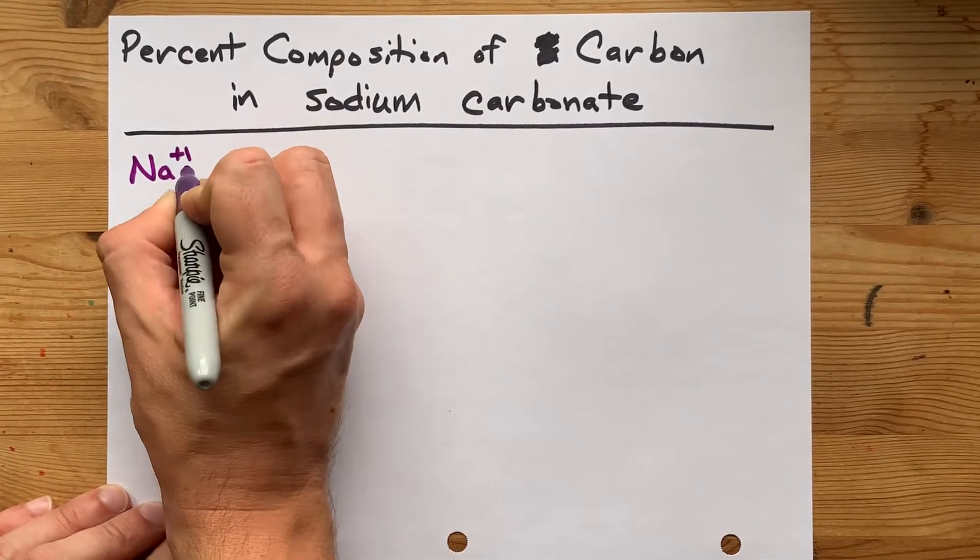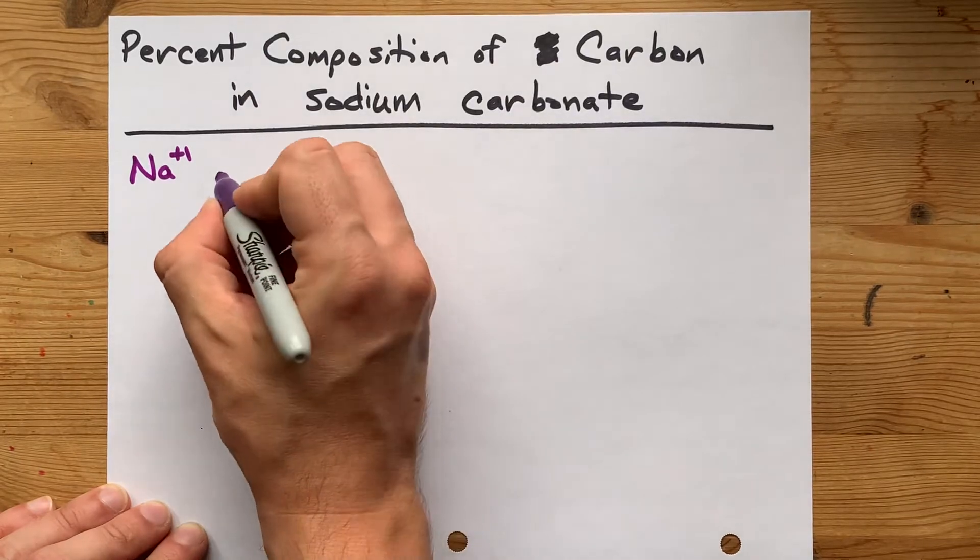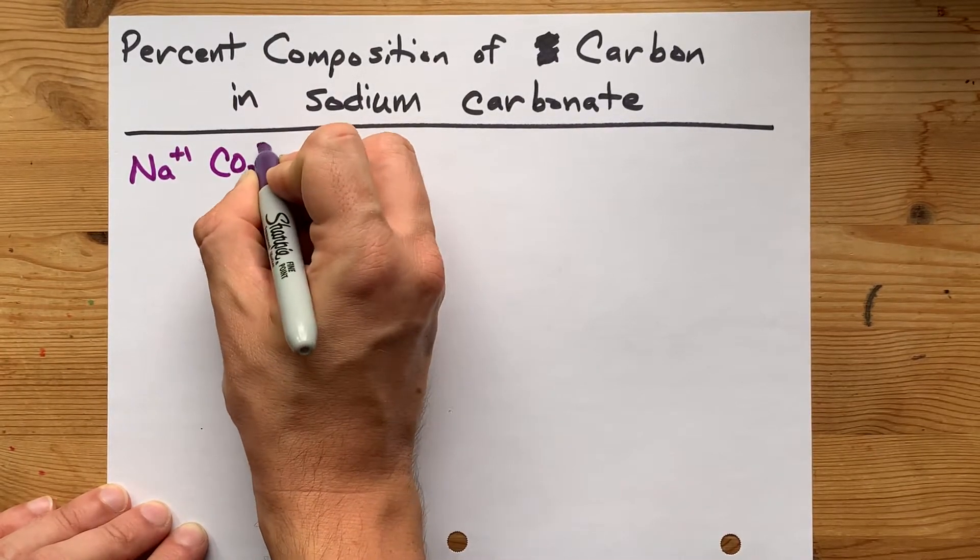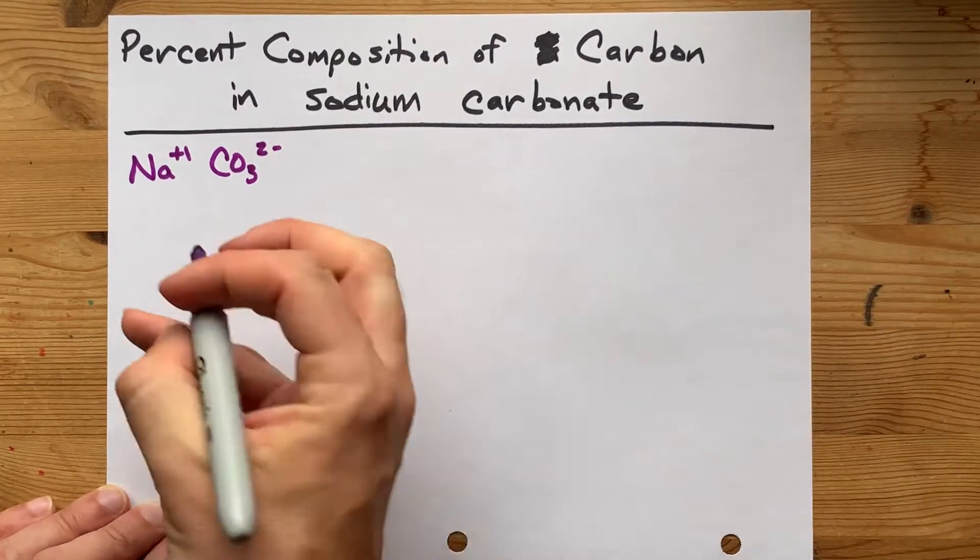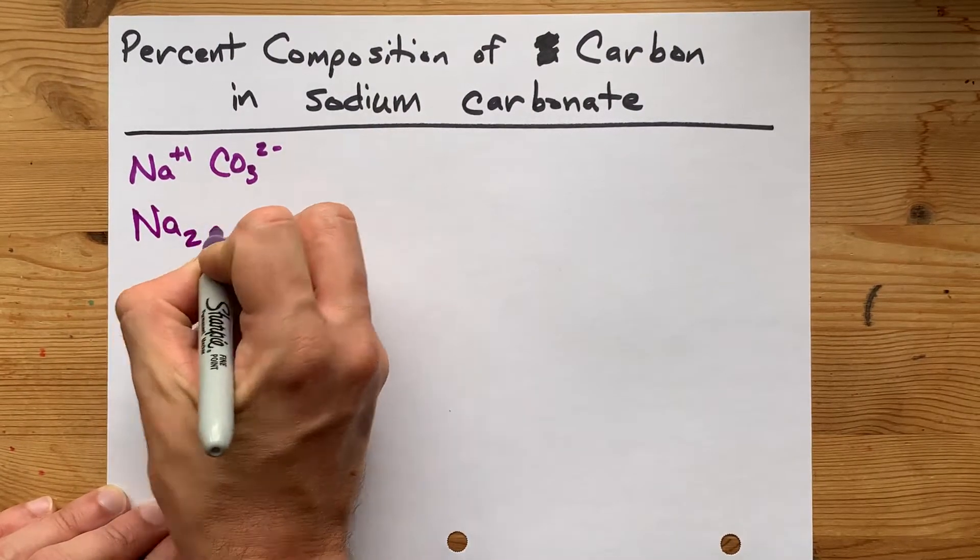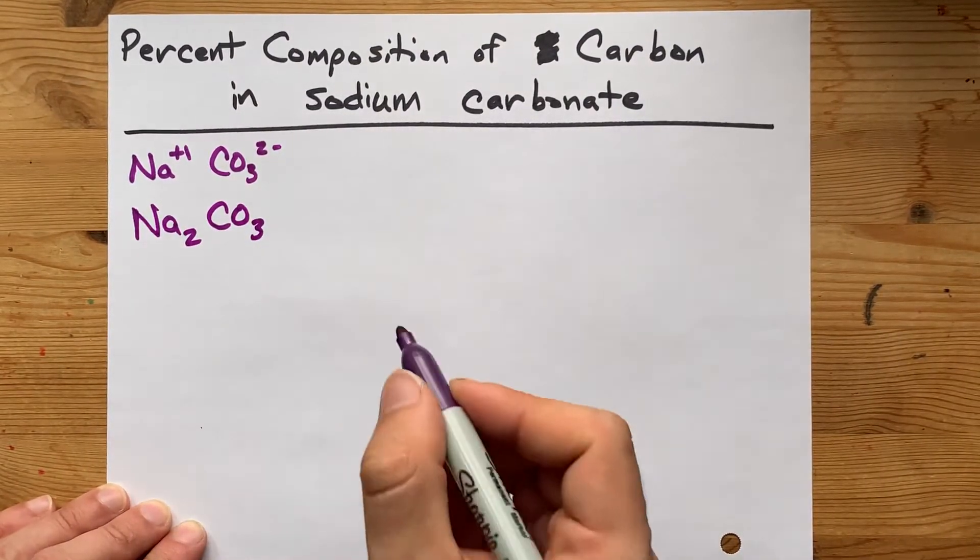Well, it's made out of sodium ions, which have a charge of plus one, and carbonate anions, which have a charge of minus two. Crisscross those because it's an ionic compound. You get Na2CO3.